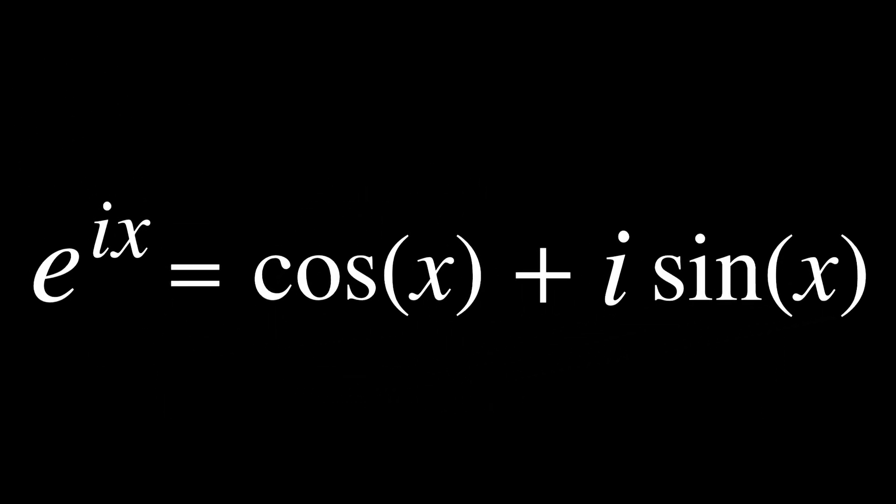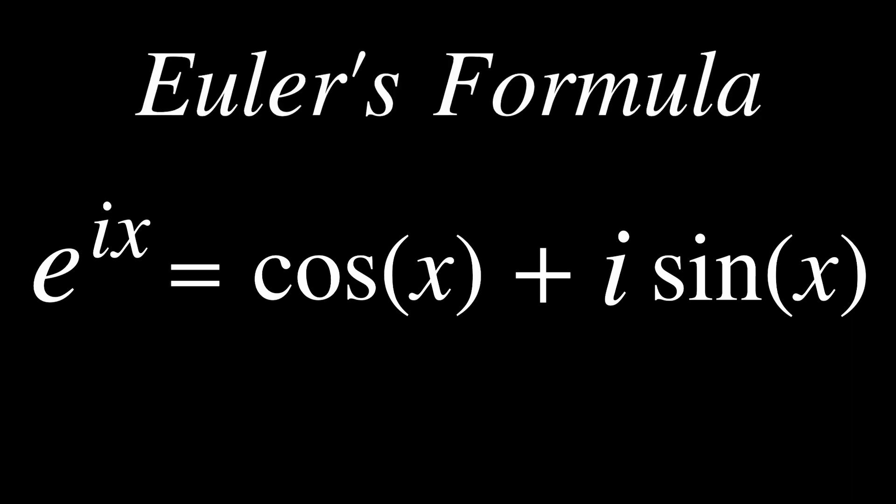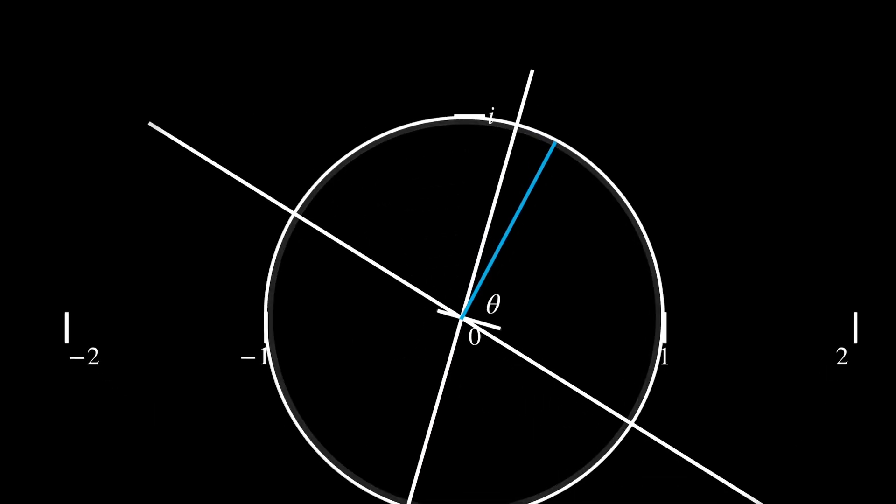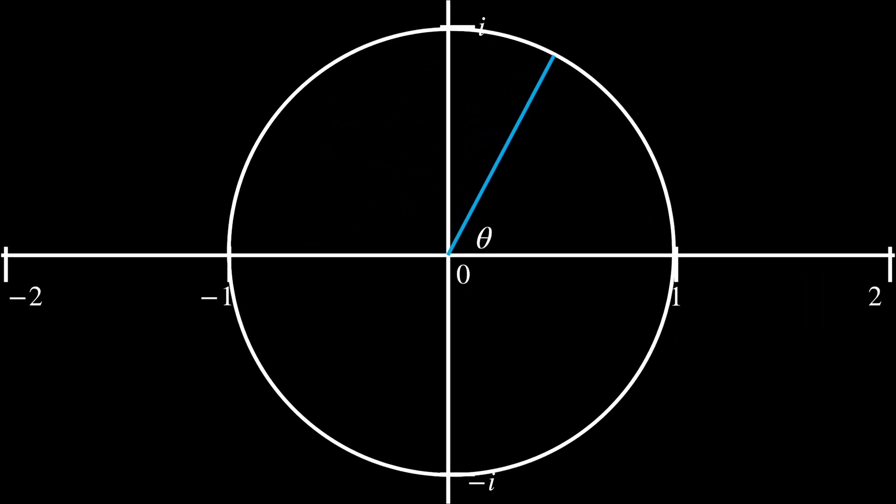e to the i x is equal to cosine of x plus i times sine of x. This is known as Euler's formula. Now, if you remember why we were doing this, it's so we can find a different way to write complex numbers in polar form. Previously, we were writing them as cosine of theta plus i times sine of theta. But now, using our identity, we can write the number in the form of e to the i theta.